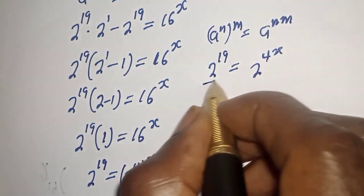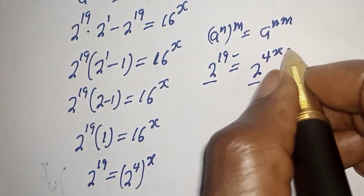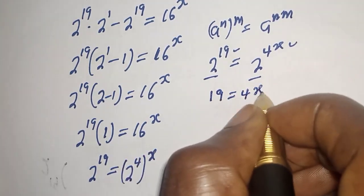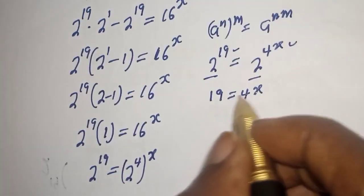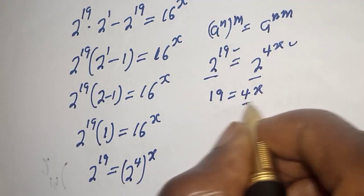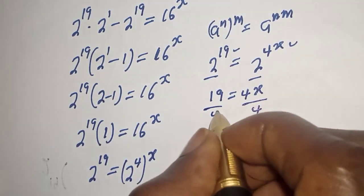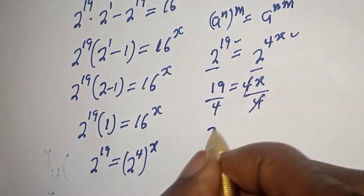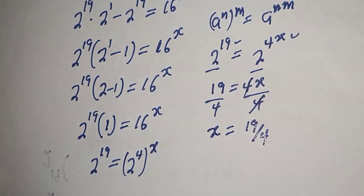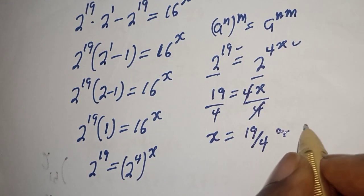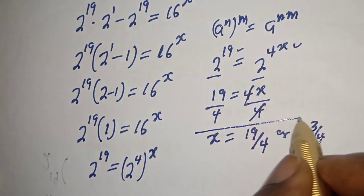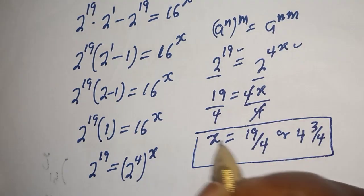We have the same base 2, so we work with the exponents. Therefore, 19 is equal to 4x. We can divide both sides of the equation by 4. This divided by 4 and this divided by 4 — the 4s cancel — so x is equal to 19 over 4, or 4 and 3 over 4. This is the final answer.